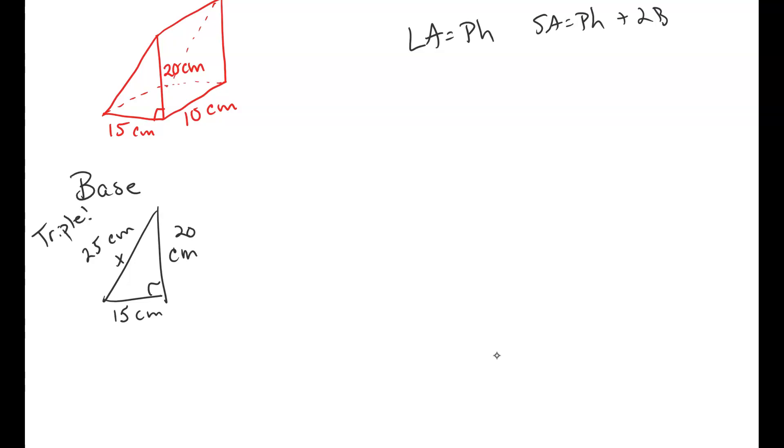I'm just keeping it easy. It's a triple. But if not, I would have called that x, and I would have just gone 15 squared plus 20 squared equals x squared and solved. x ends up being 25. So what is the perimeter for this base? What's 15 plus 20 plus 25? And I get that to be 60. All right?